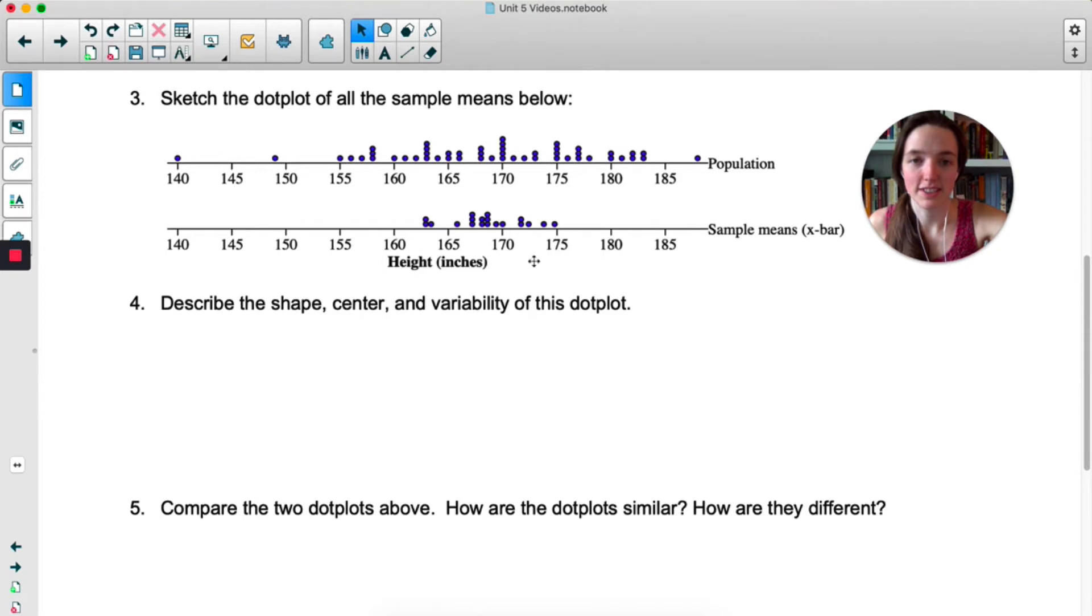Okay, the shape, center, and spread of this dot plot is what you're going to do next, and then number five says to compare. So four is only asking you about the sampling distribution. Five is asking you to compare these two distributions. Pause the video and do that now.